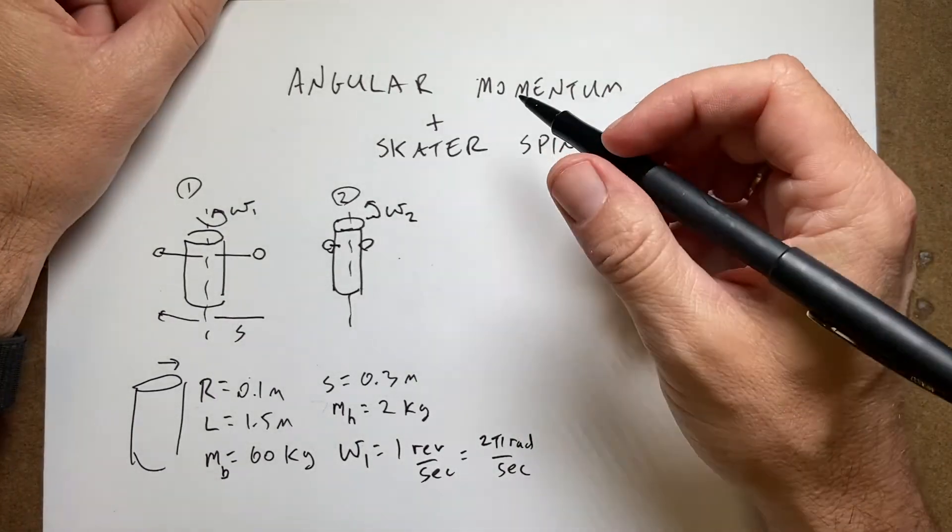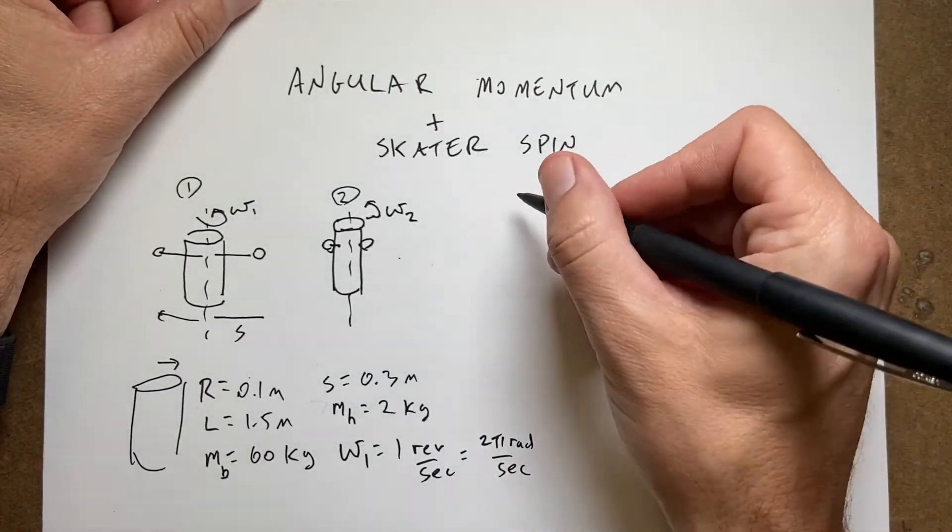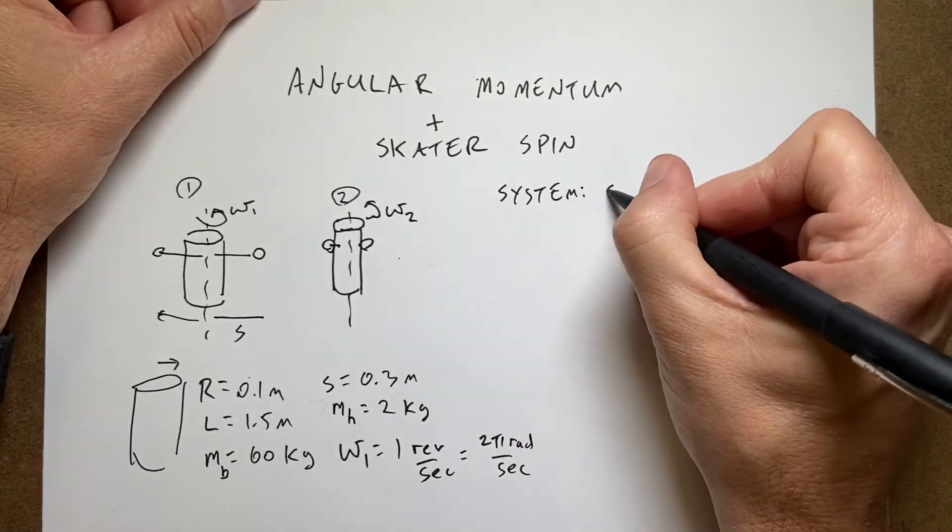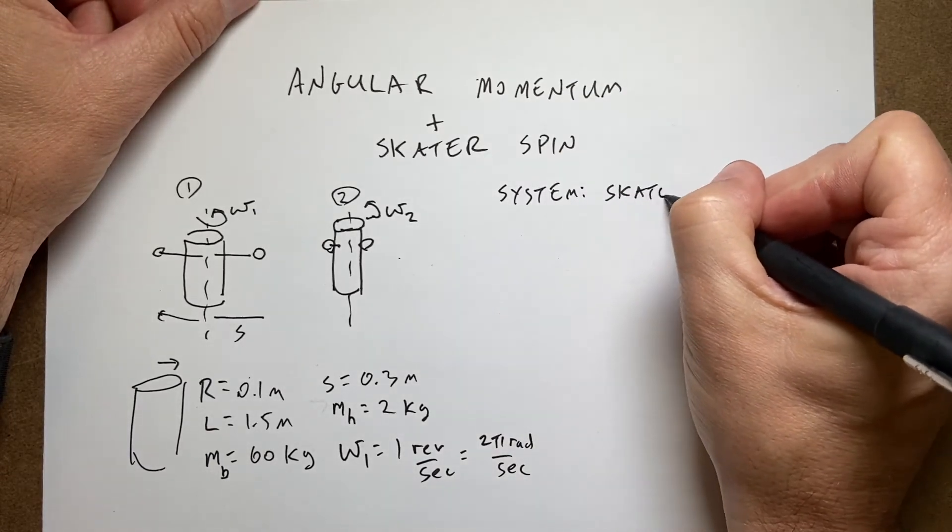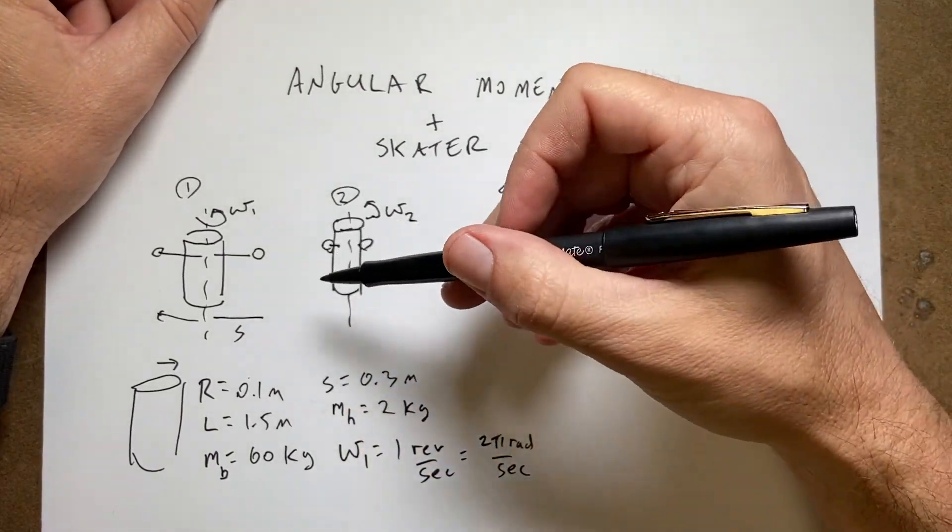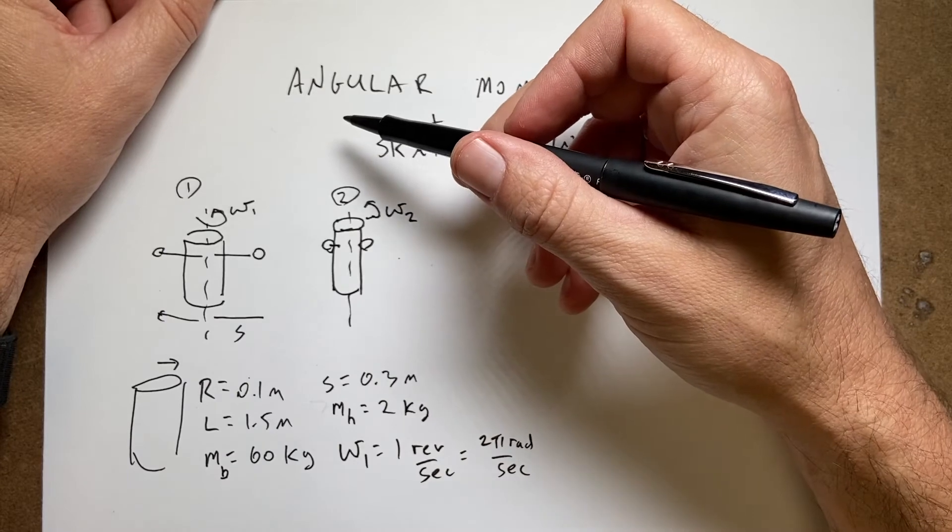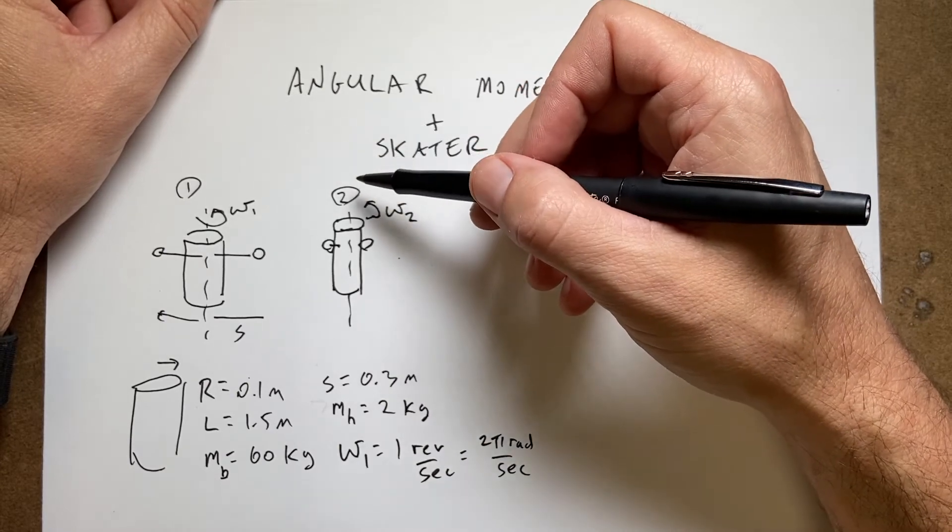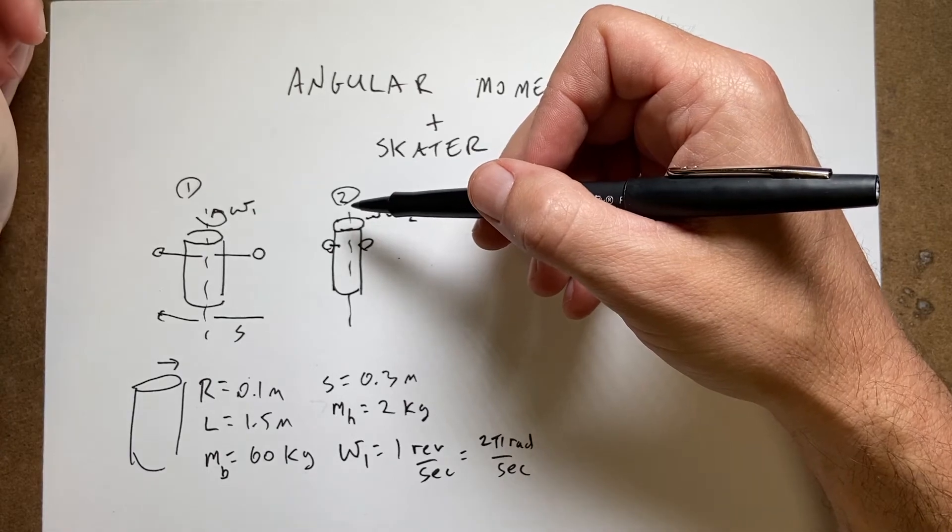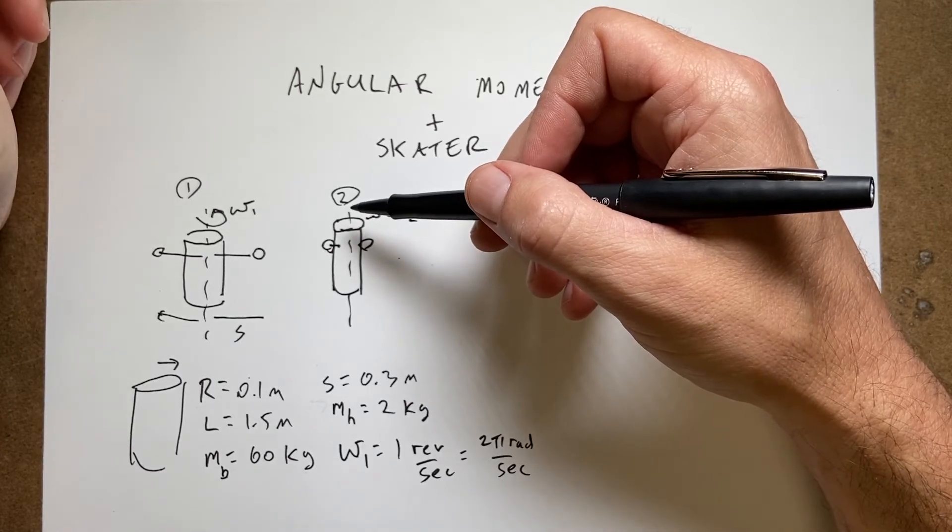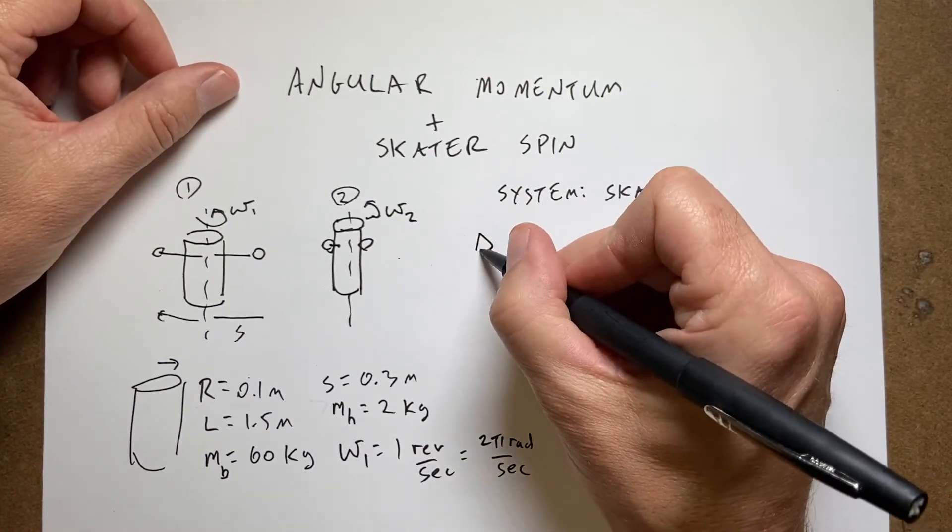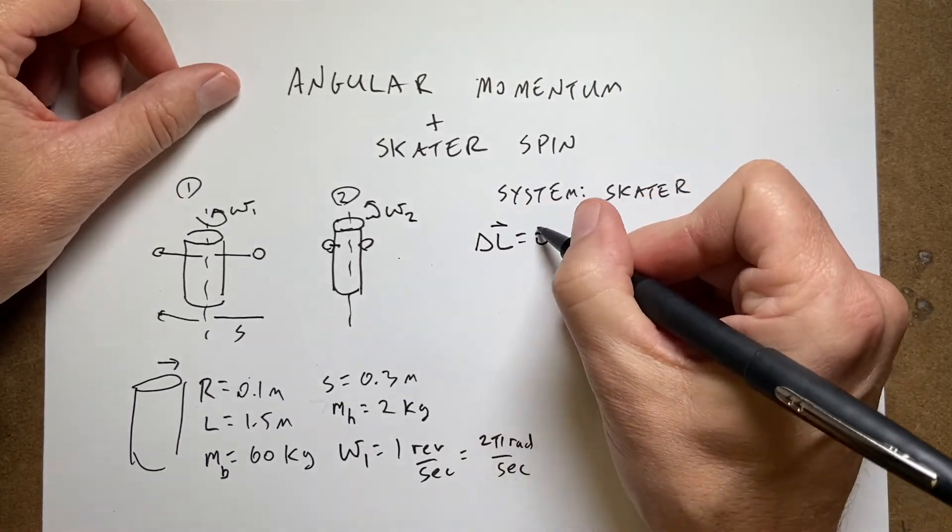Okay, so what's going on here? The first thing we need to think about is the system and that's just going to be the skater. If I have the skater as my system, I have a gravitational force pulling down and a normal force from the ice pushing up. However, those two forces are equal and opposite and they do not exert a torque on the system. So that means that the change in angular momentum as a vector is zero.